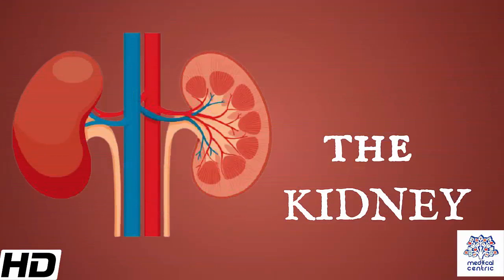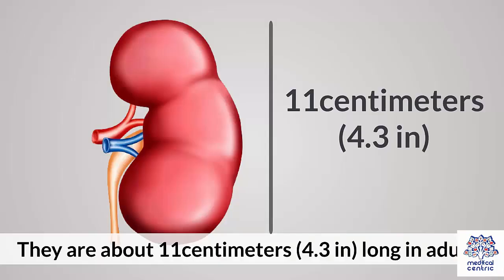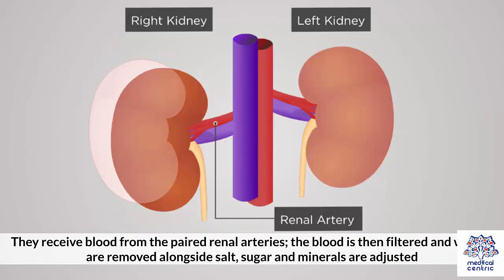Today's topic is the kidney — the two bean-shaped organs located on the left and right sides of the abdomen. They are about 11 centimeters or 4.3 inches long in adults. They receive blood from the paired renal arteries. The blood is then filtered and wastes are removed, alongside salt, sugar, and minerals are adjusted.